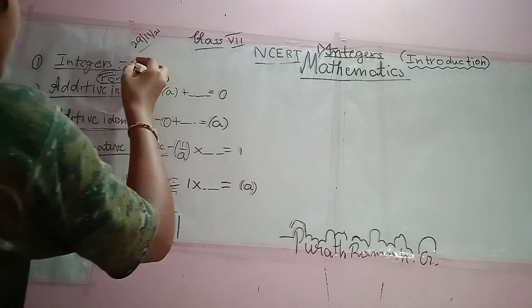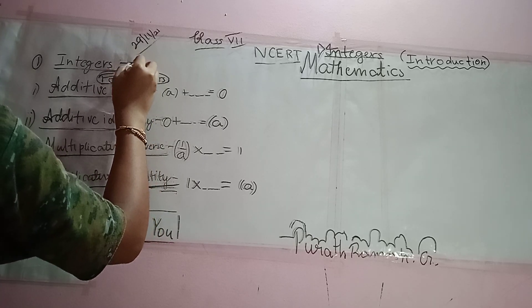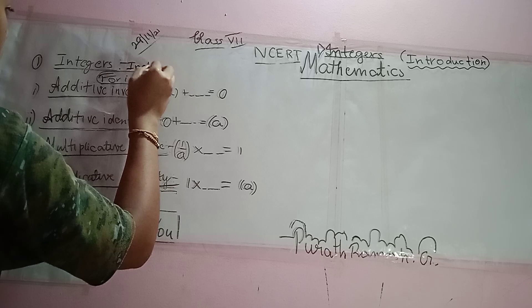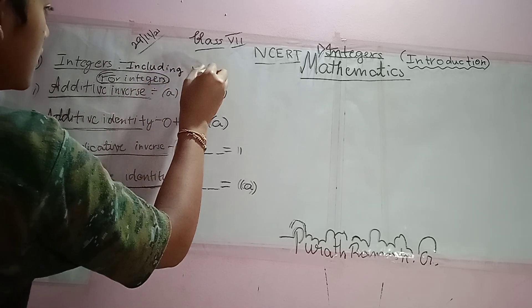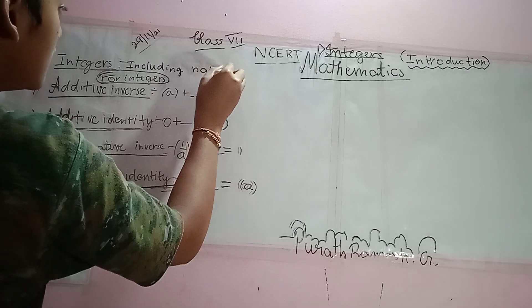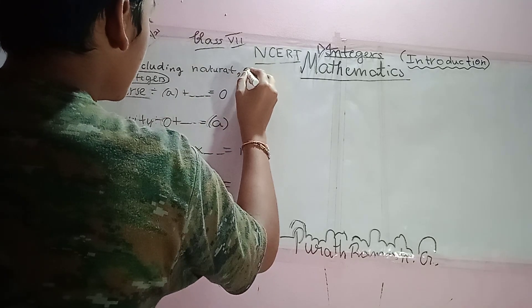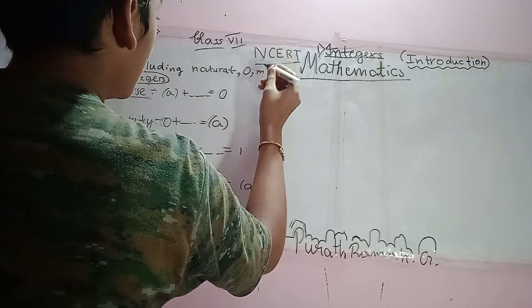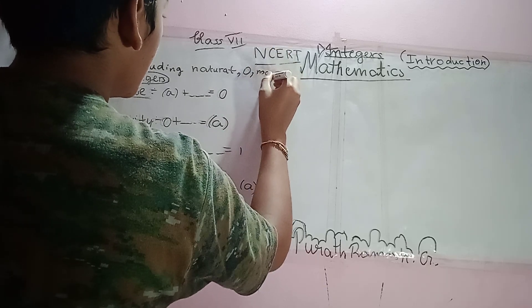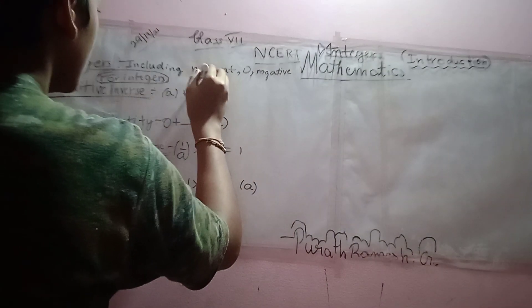What are integers? Integers are including natural numbers, 0, and negative numbers.